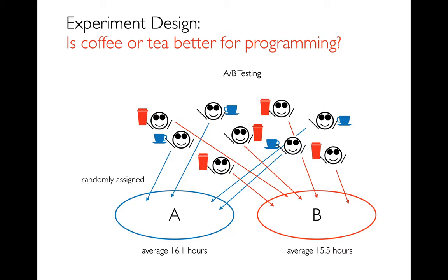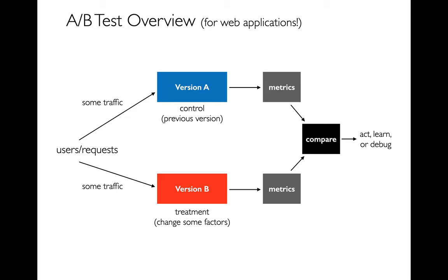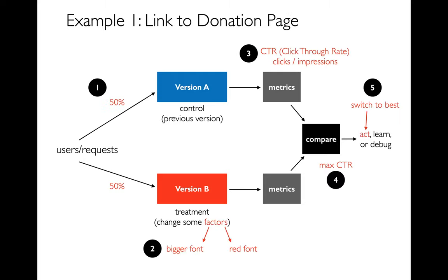What does it look like to do A-B testing at a big company optimizing software or a product? We split traffic — users or requests — and send them to different versions: version A, maybe a control or previous version, and version B where we vary some factors, like a bigger font size or red font. We gather metrics from both groups. A common metric is click-through rate: if I show you an ad, what percentage of the time do you actually click on it? Maybe with big red font people click more, or maybe it's off-putting. We compare those metrics and decide what matters.